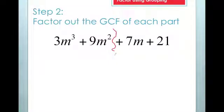My next step is to factor out the greatest common factor for each part. Looking at the left side, I notice there's a greatest common factor of three for the numbers three and nine. The greatest common factor for the variable part is m squared.